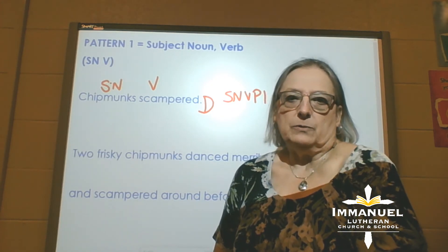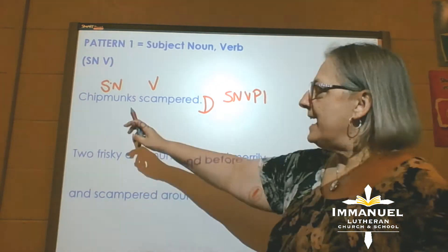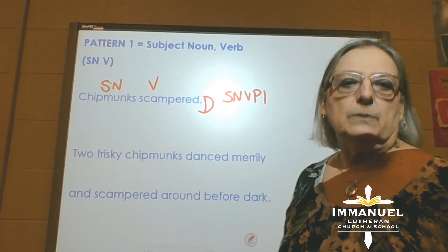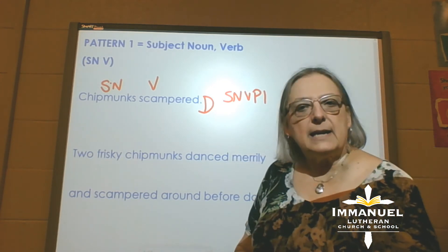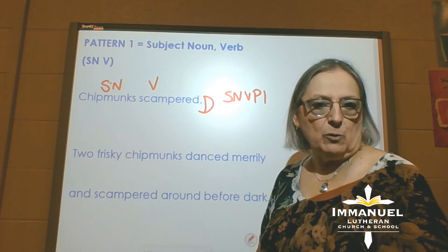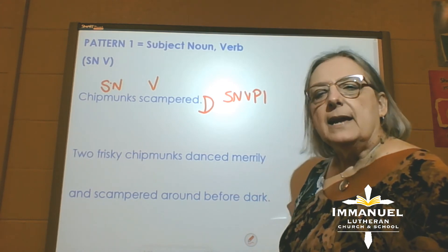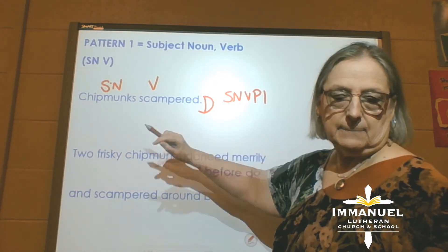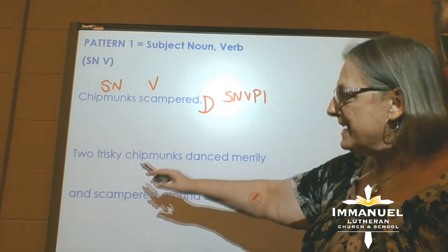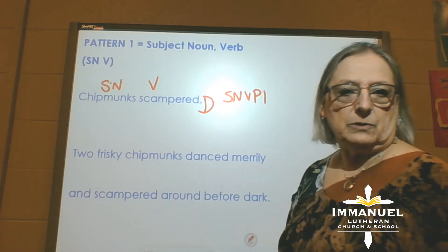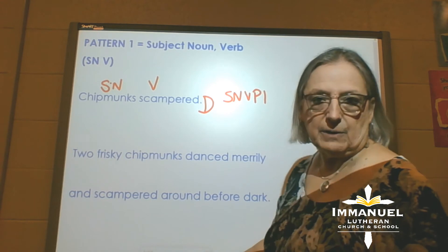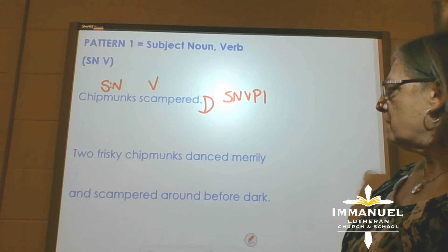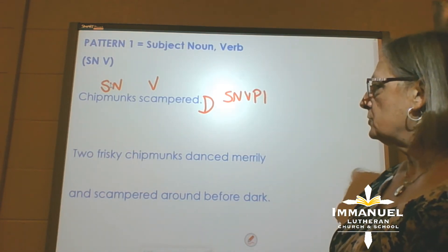Now it's just the bones. We can do all kinds of things. We can add adjectives to describe the chipmunks. We can add adverbs to give us more information about how they scamper, or where they scamper, or when they scamper. We can add other verbs. So I've taken this very simple sentence — chipmunks scampered — and I've expanded it. We've put some meat on the bones. So we read: two frisky chipmunks danced merrily and scampered around before dark.